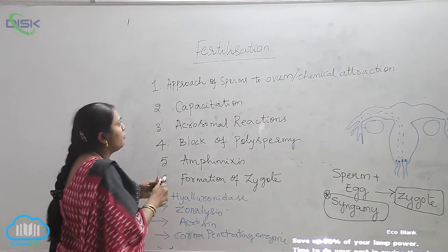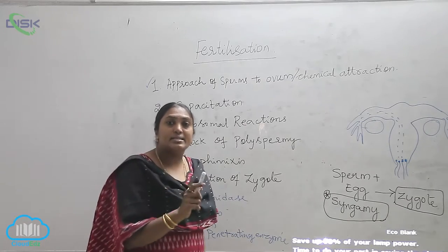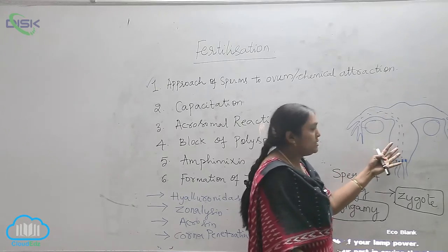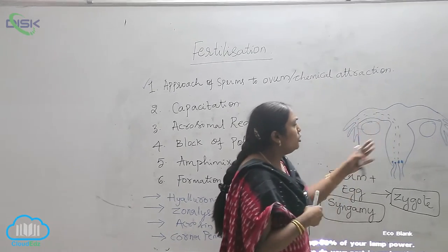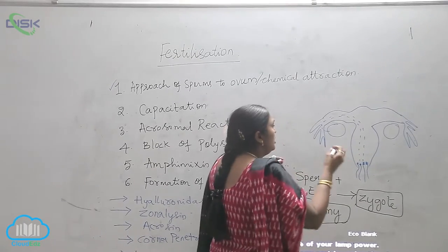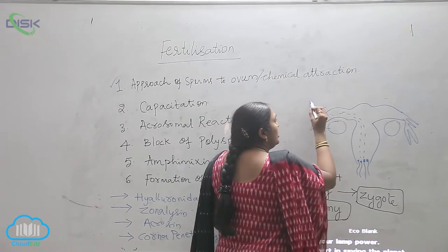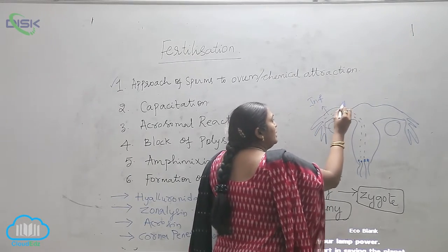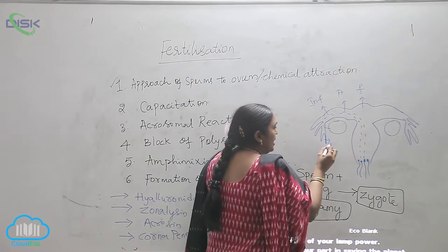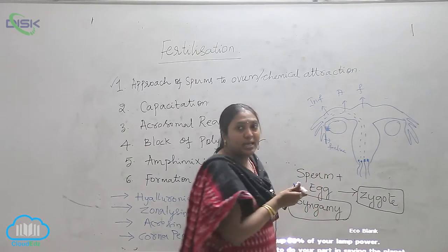The first step is the approach of sperms to the ovum or chemical attraction. As you know, this is the female reproductive system — a pear-shaped structure. This is the fallopian tubule, which has finger-like structures. The nearer part is called the infundibulum, followed by the ampulla and the fundus, and these are the fimbriae. The connection is called the ovarian tissue.